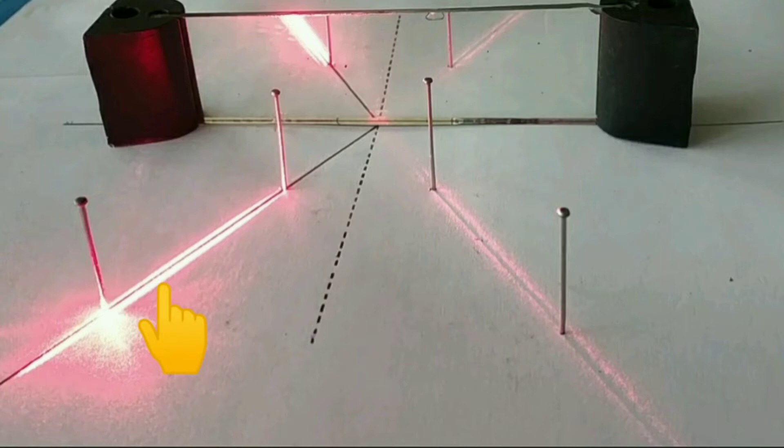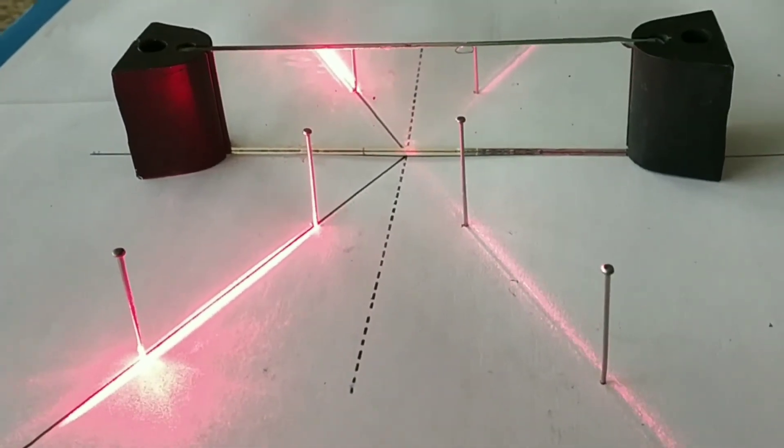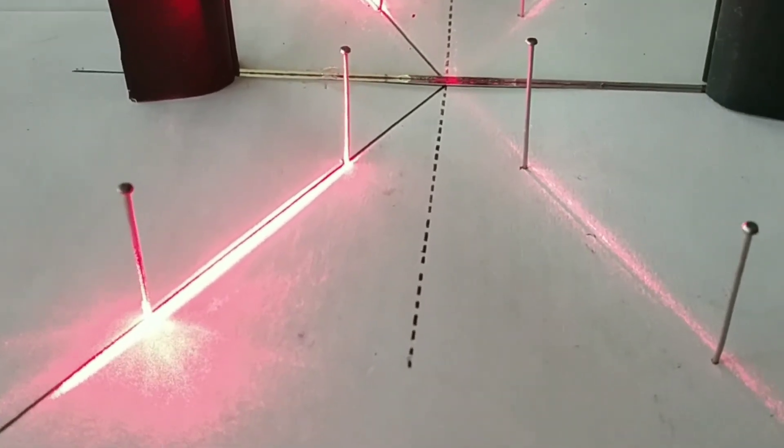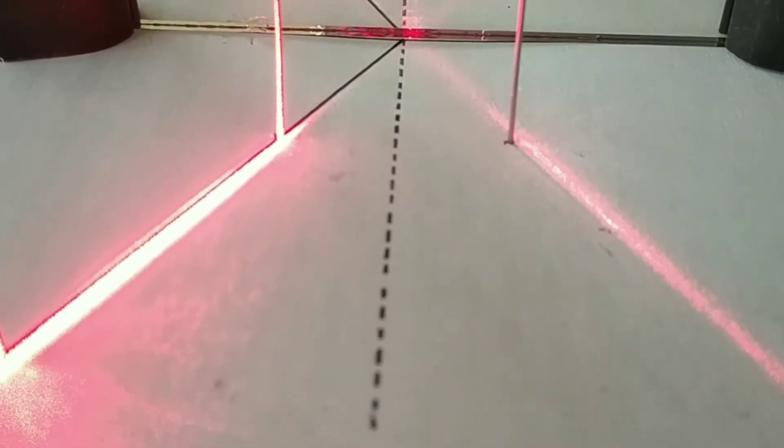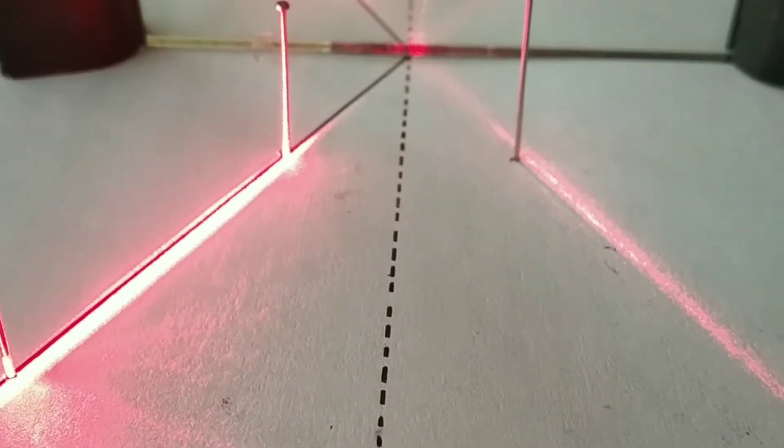This is the incident ray and this one is the reflected ray. So, by using laser beam, it can be verified whether the positions of the pins which we have located is correct or not.